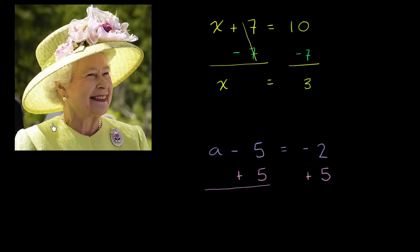And so on the left-hand side, I'm left with a and then the negative 5 and the positive 5 cancel out. And on the right-hand side, and they're going to stay equal because I did the same thing to both sides, we have negative 2 plus 5, which is equal to 3. So a is equal to 3. Once again, you can verify it. 3 minus 5 is indeed equal to negative 2.